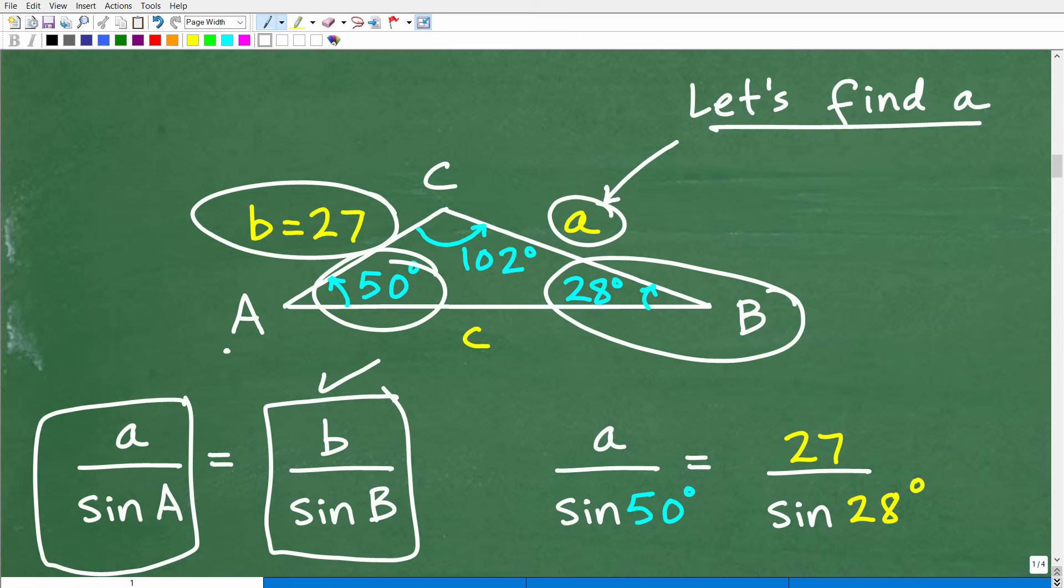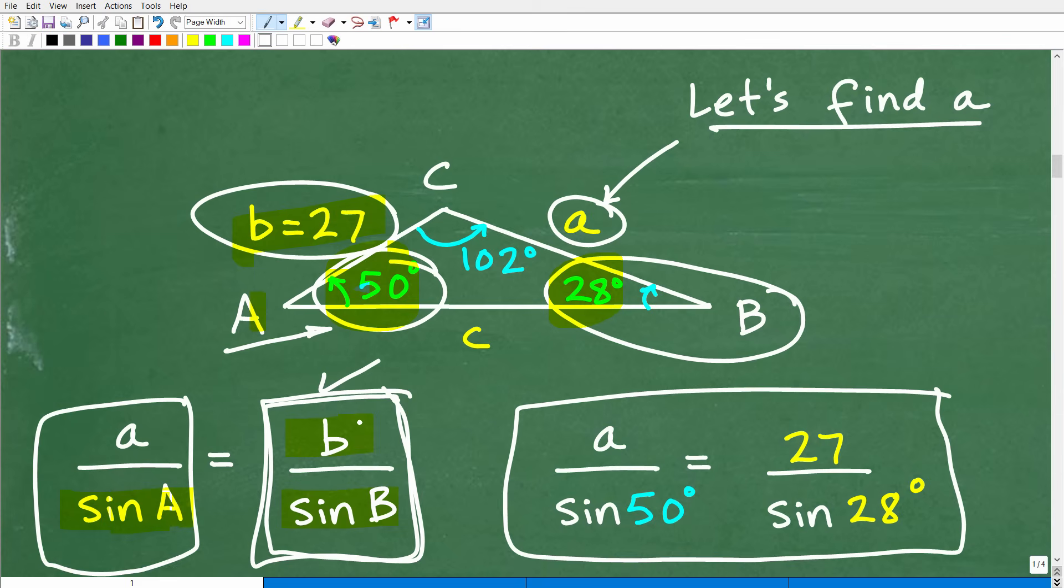Now, do I have A's angle? I do. Okay. So here, I can calculate the sine of A because A is 50 degrees. I know what b is. b is 27. And I can calculate the sine of B because I have that angle, which is 28 degrees. And you can see the setup right here. So what you want to do when using the Law of Sines is to identify in the triangle what given information you have to have a complete fraction.